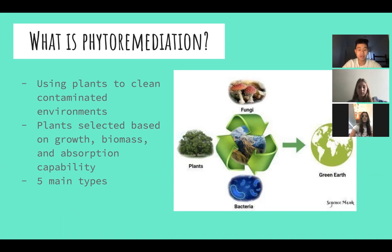This can be done by taking advantage of characteristics of certain plant species to take up or metabolize the negative substances. By using these plants, the contaminants in the environment may be removed, immobilized, degraded, or transformed. The plants that are used are selected based on growth, biomass, and their ability to tolerate and take up the pollutant. There are five main types of phytoremediation: rhizofiltration, phytoextraction, phytotransformation, phytostimulation, and phytostabilization.